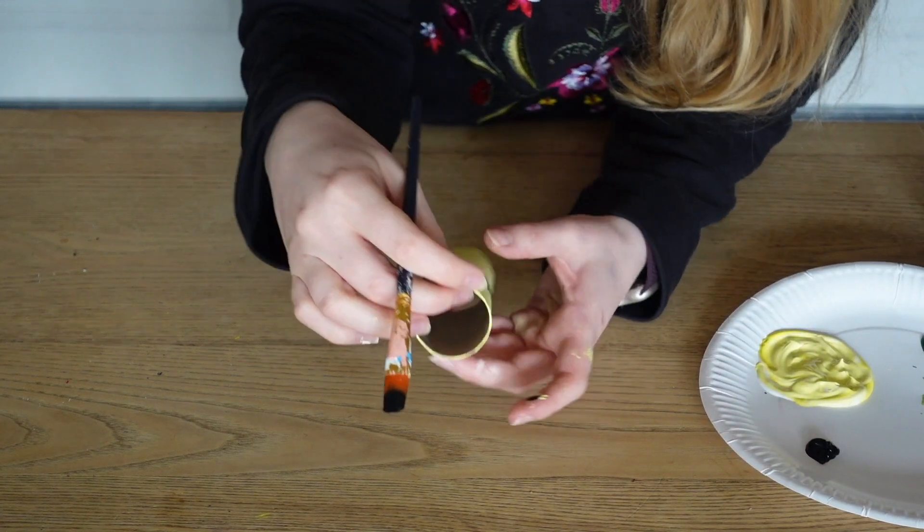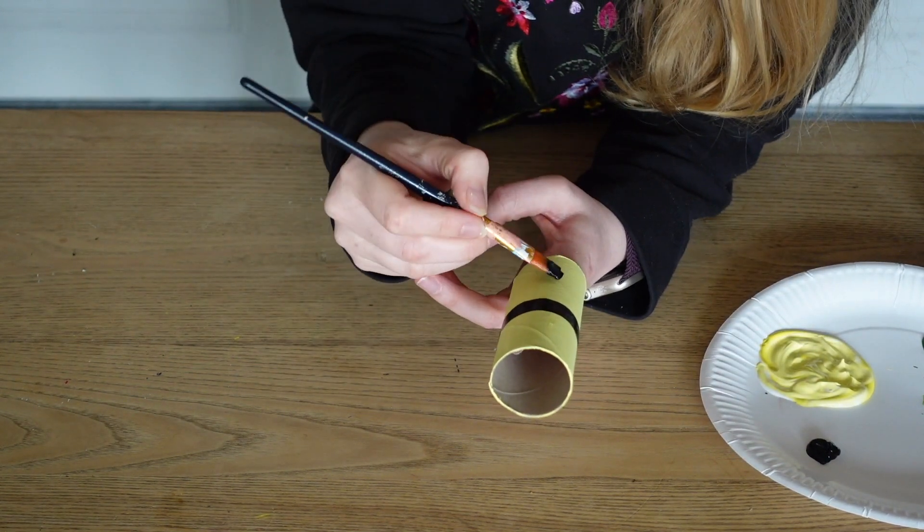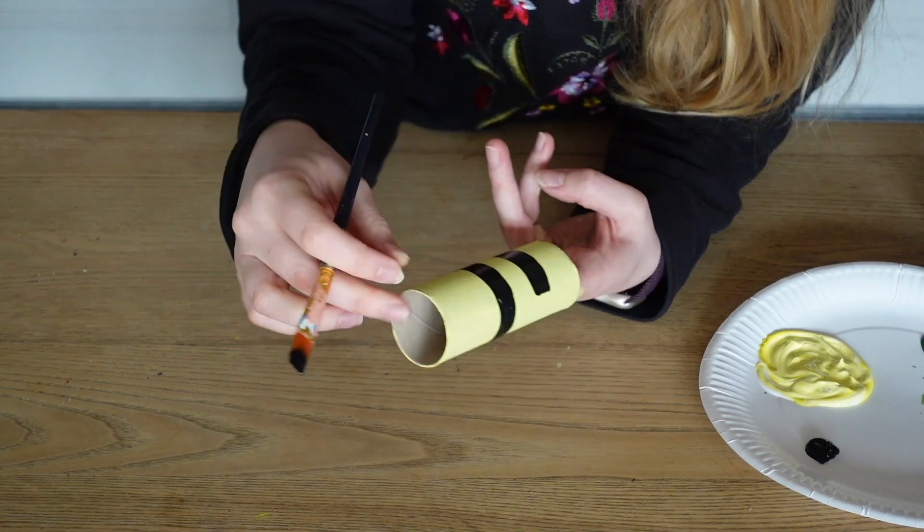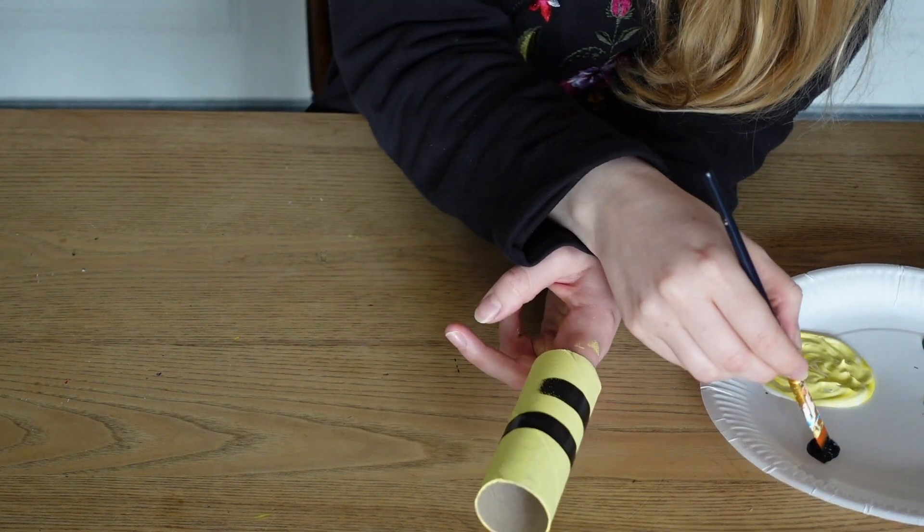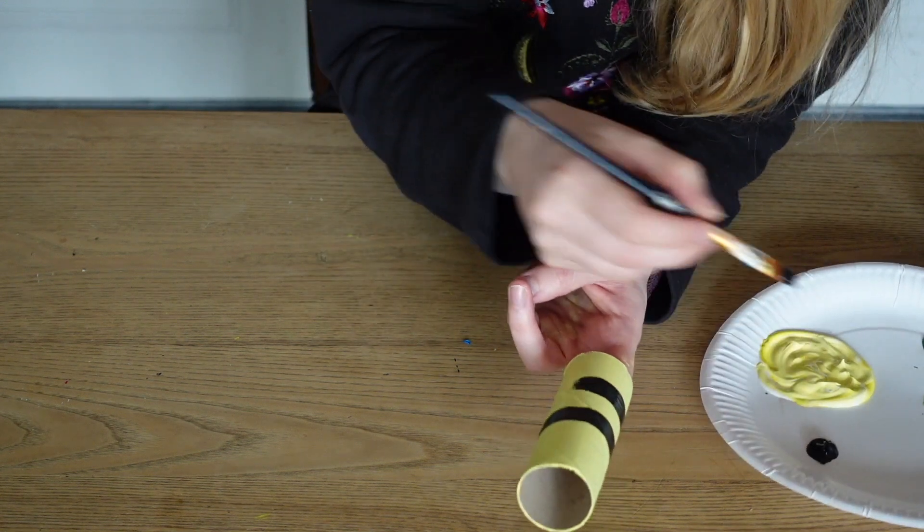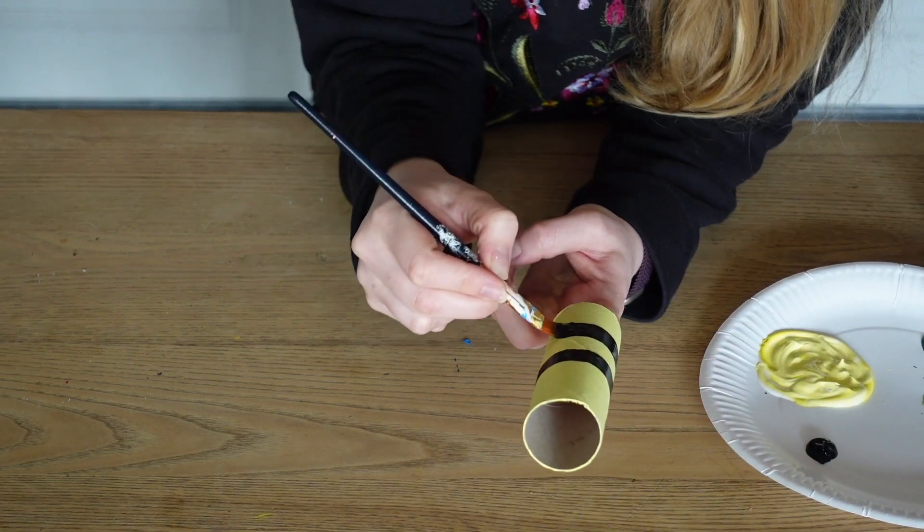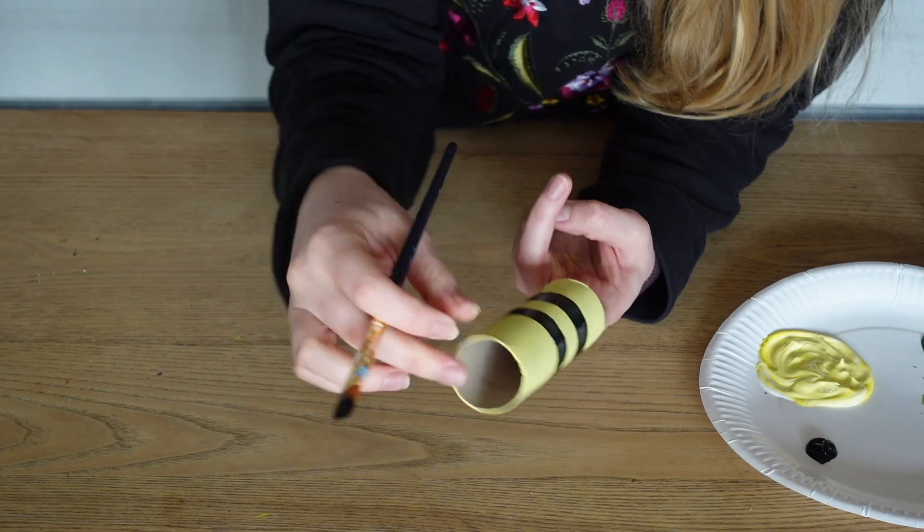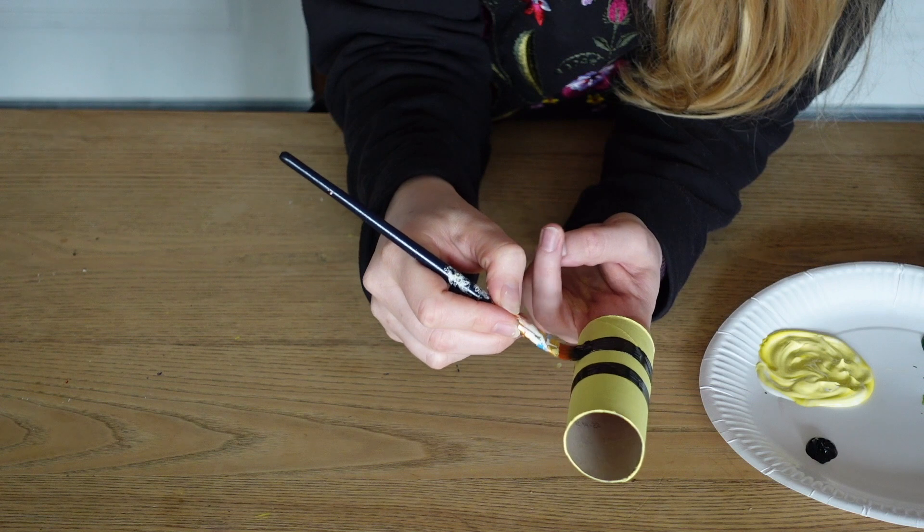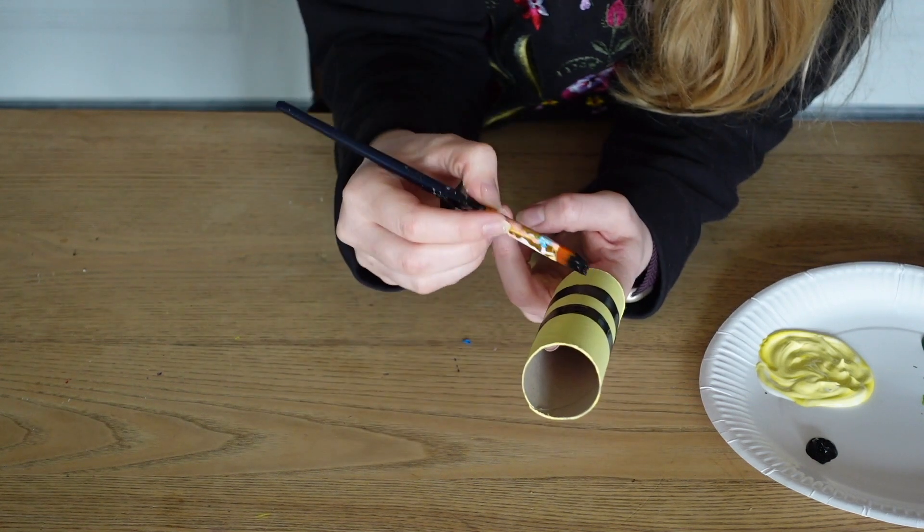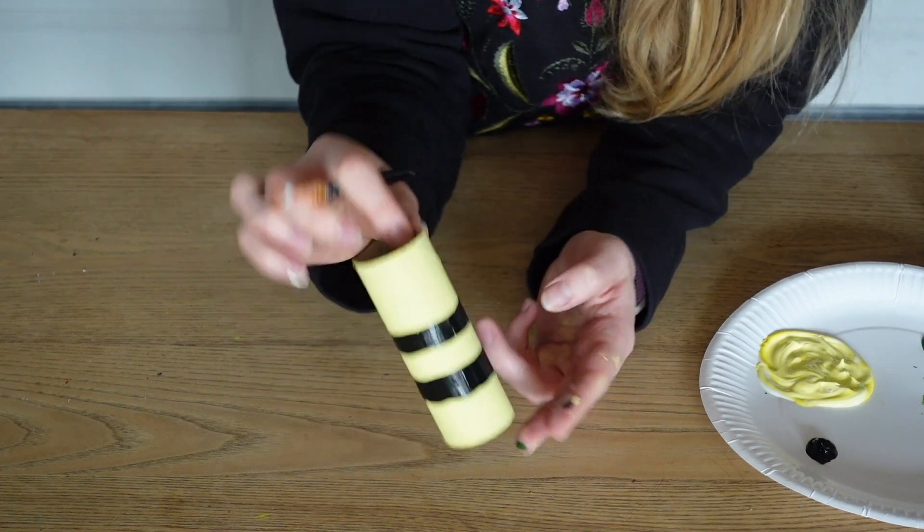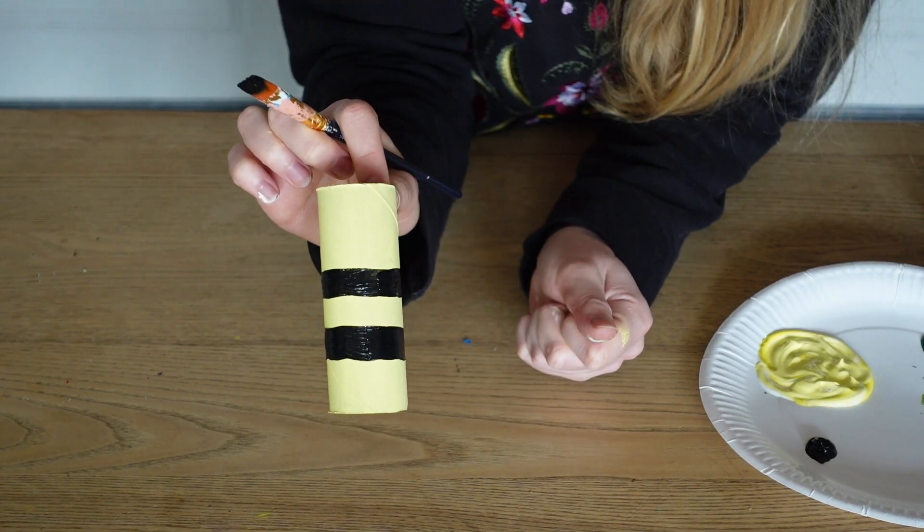So I'm going to give him two stripes, I'm going to hold it in the middle. Less fear of getting my fingers in the paint and smudging it all over my bumble bee then. Okay, so again, pop this to the side, leave it to dry and we'll come back and add all the details to our bumble bee.